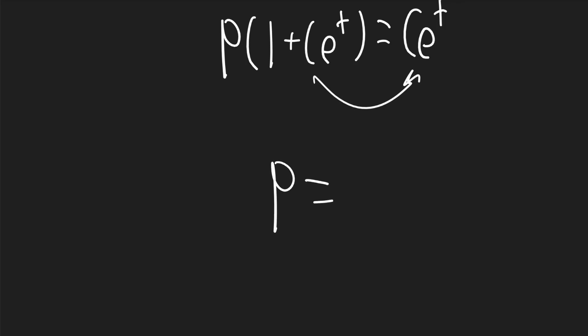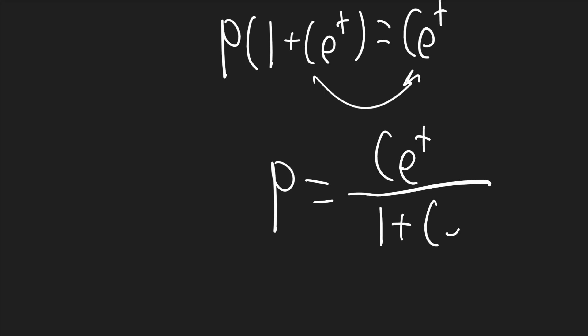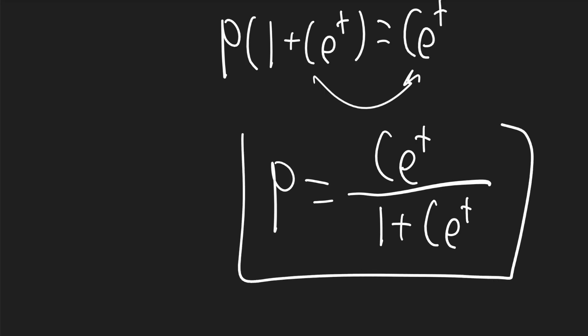Dividing to the other side, we get p = Ce^t over (1 + Ce^t), and that is your final answer. If this video helped you, consider subscribing.